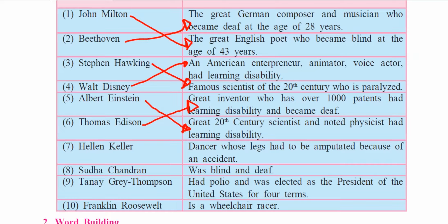Thomas Edison was the great inventor with over 1,000 patents who had a learning disability and became deaf. Helen Keller was blind and deaf and was a great author. Sudha Chandran was a great dancer whose legs had to be amputated because of an accident. Tanae Gray Thompson was a wheelchair racer. Franklin Roosevelt had polio and was elected as president of the United States for four terms. You should note down all these correct matches.